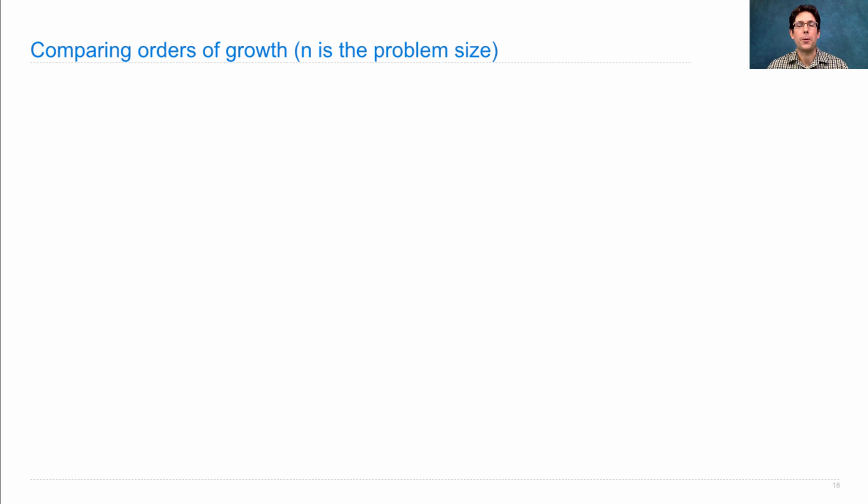Okay, so what are all the orders of growth that you need to know? Well, the first is called exponential growth, and it will be some constant number B raised to the nth power. These are processes that grow very quickly, and so you really can't compute them for large n.